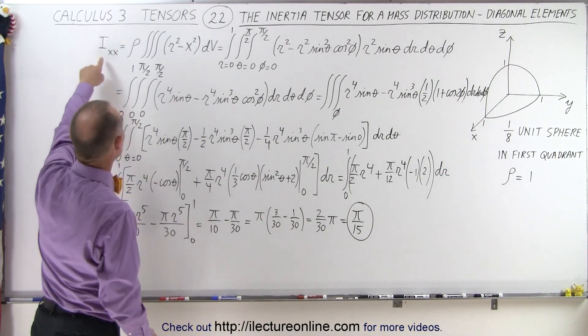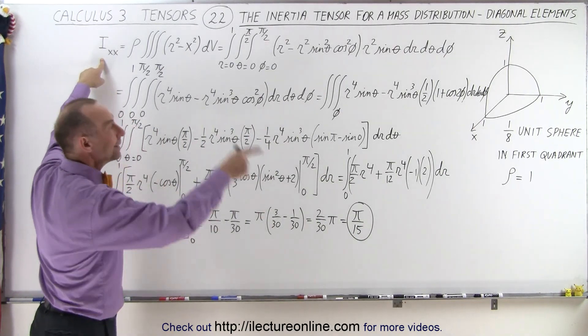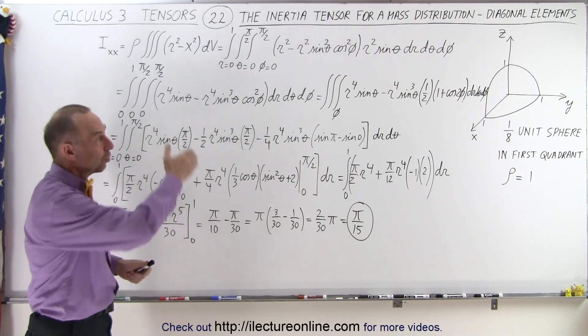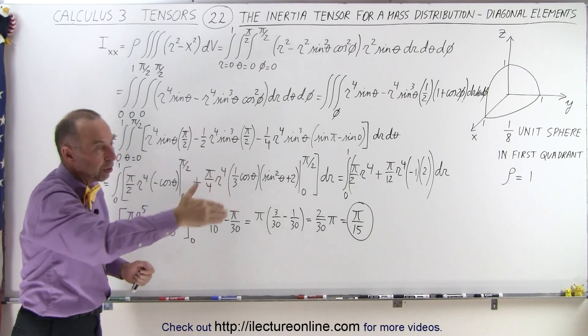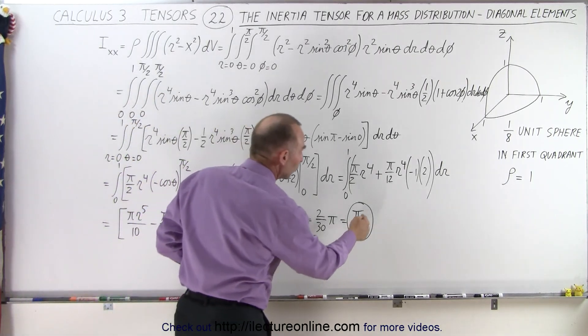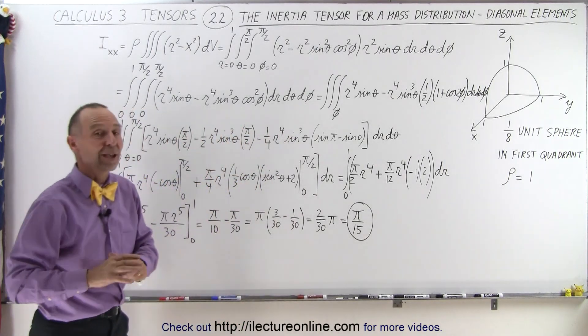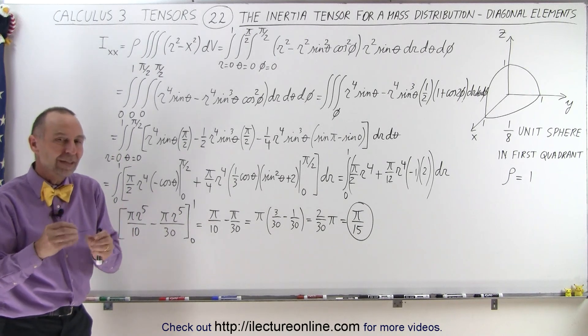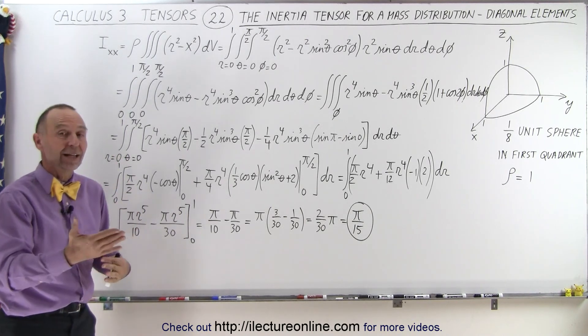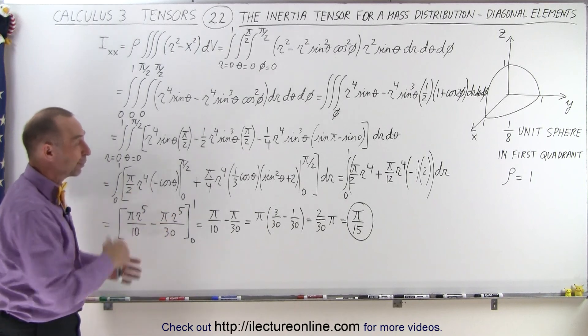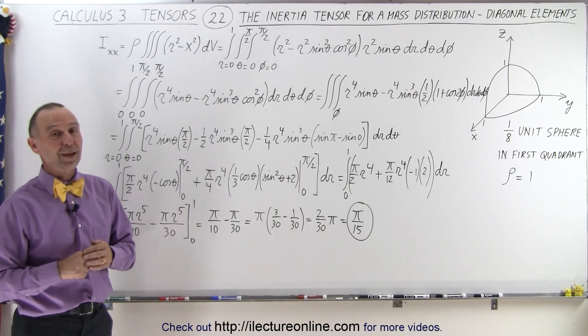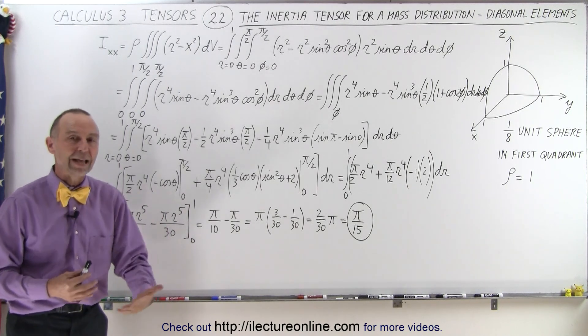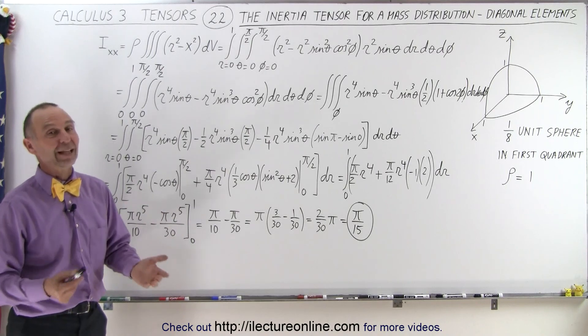This is the result we get for the moment of inertia about the x-axis, and as we indicated, we should get the same result for the y-axis and the z-axis, so all three diagonal terms of the inertia tensor should indeed give us pi over 15. At least that takes care of the diagonal terms. Now we need to find the moment of inertia elements in the inertia tensor for the off-diagonal elements. Of course for that, we're going to have to do another video, because I'm out of board space. So stay tuned, and we'll show you how to do the second part of this problem, looking for the off-diagonal elements using a similar technique. That's how it's done.